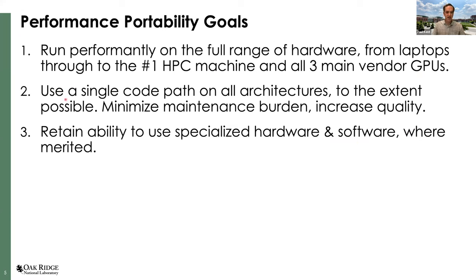What are our goals on the software side? First, a number one goal is to run well and quite performantly on the full range of hardware — from a student laptop with an APU, all the way through to the number one HPC machine, and importantly on all three main vendor GPUs. This potential for a lot of variety leads to our second goal: to the extent possible, we want a single code path on all architectures, which will reduce our ongoing maintenance burden, reduce test configurations, and result in higher quality code.